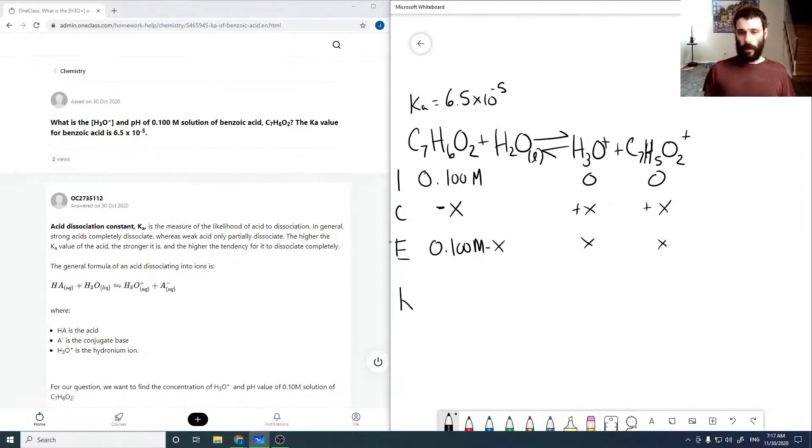And so our Ka is concentration of H3O plus times concentration of C7H5O2 minus over our concentration of C7H6O2. And these are at equilibrium, so these are X, X, and 0.1 minus X.